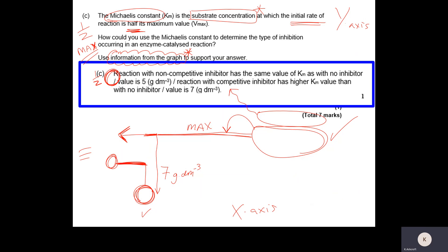So if you just want to quickly look through and mark it: the reaction with the non-competitive inhibitor has the same Km value of 5 grams per decimetre cubed as with no inhibitor present. The reaction with the competitive inhibitor has a higher Km value of 7 grams per decimetre cubed compared to no inhibitor. That allows us to distinguish which type of inhibitor is which.